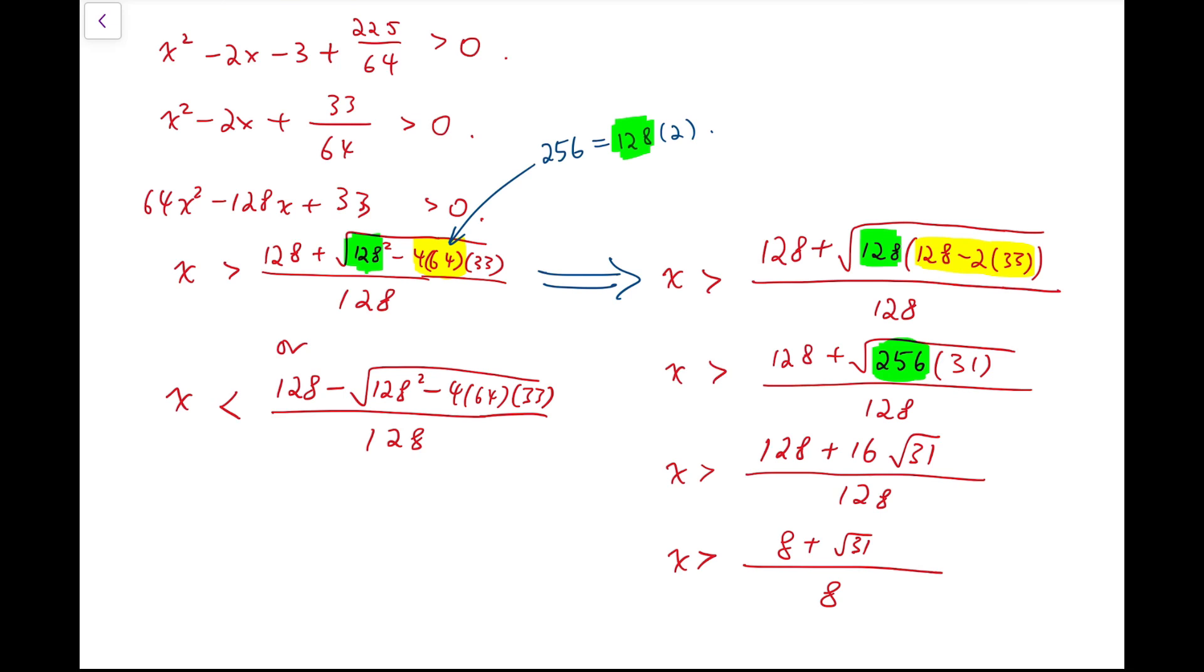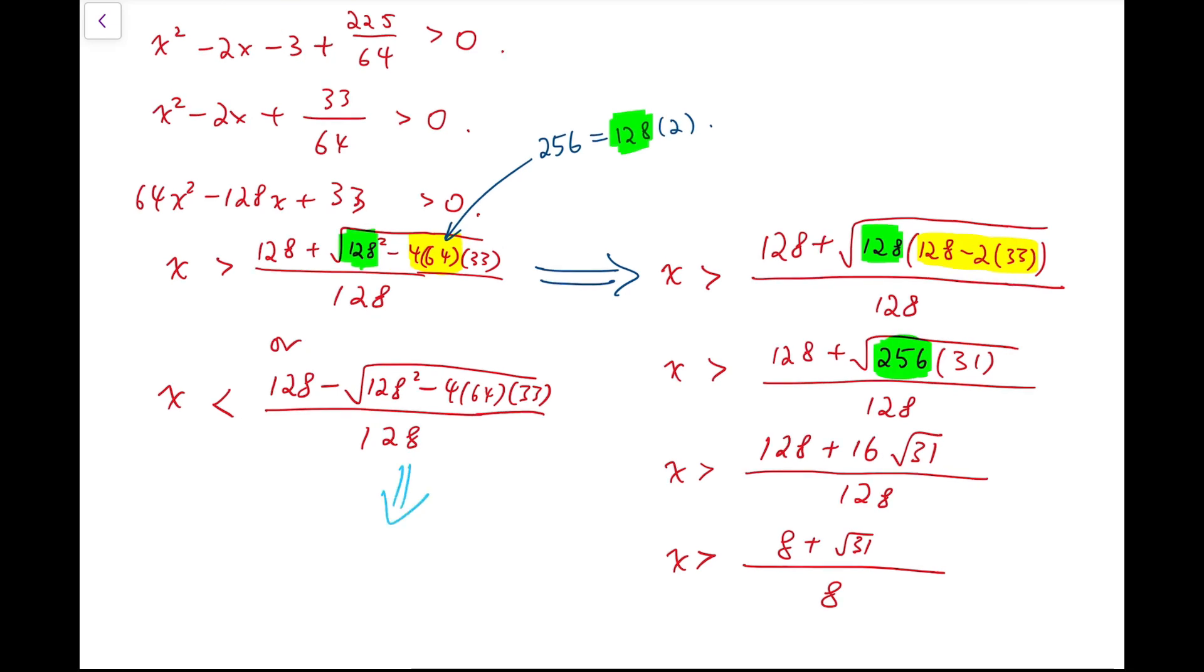And similarly, using a similar argument, I can say that the second inequality will be x is less than 8 minus root 31 over 8. So, simply by squaring, we can get this as our temporary solution.